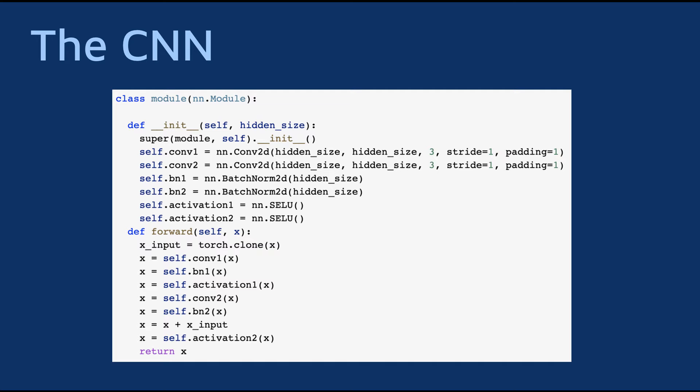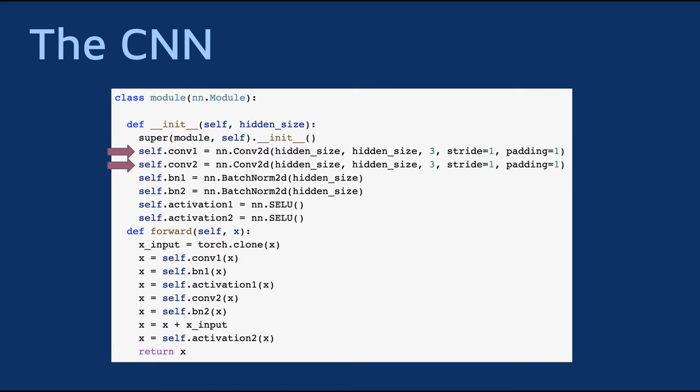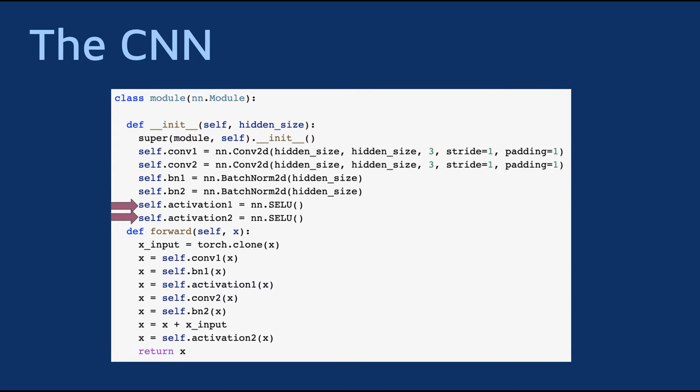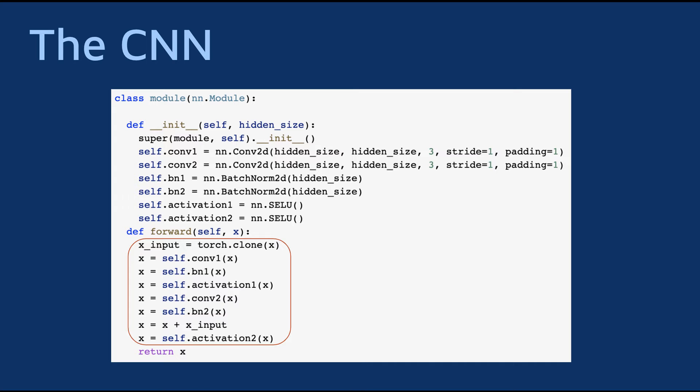Now let's create a neural network. As I mentioned earlier, it will have convolutional layers. In addition to that, I'll use some common techniques to improve the training process. We'll start by defining the building block module of the network. As you can see, each module contains two convolutional layers, two batch normalization layers for improved training, and two SILU activation functions that typically give great results. On top of that, the forward function contains a residual connection. The input is added to the output, which has been shown to improve the training process.